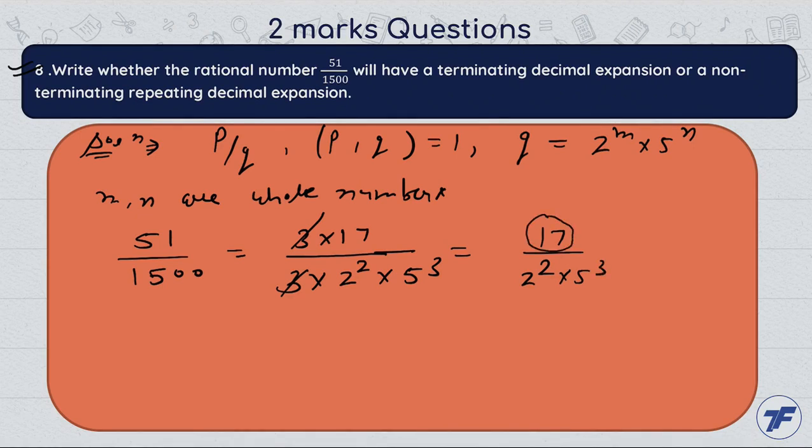We can check p upon q, and q is in the form 2 power 2 and 5 power 3. Denominator in the form 2 power m times 5 power n, where m equals 2 and n equals 3.